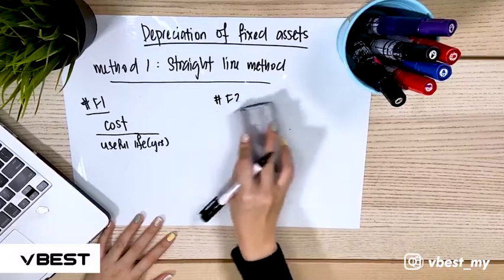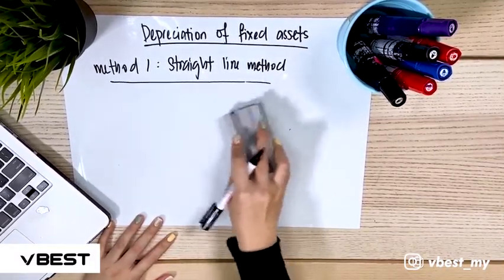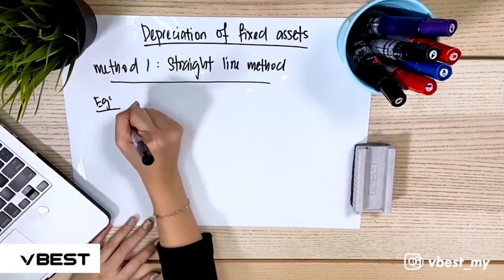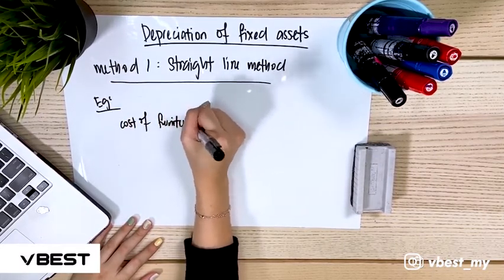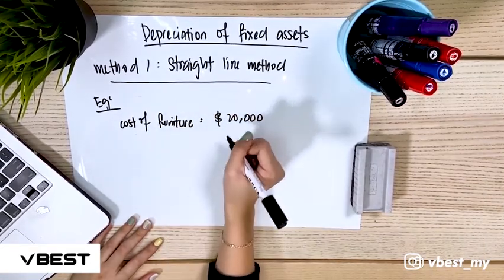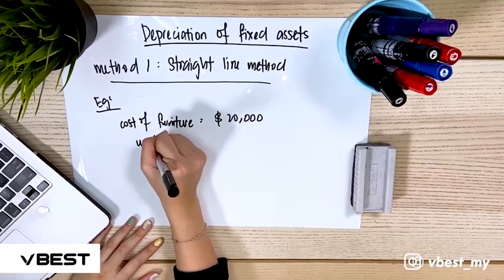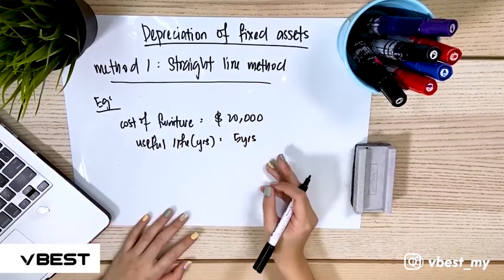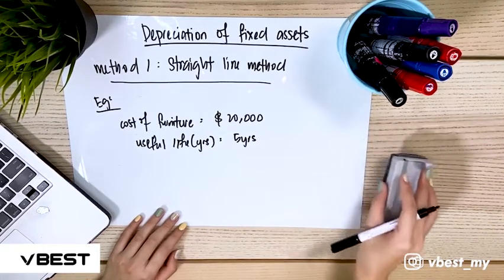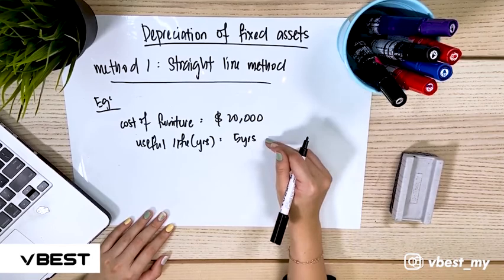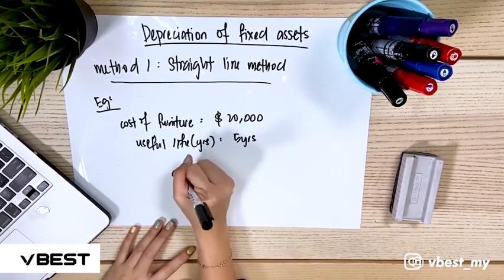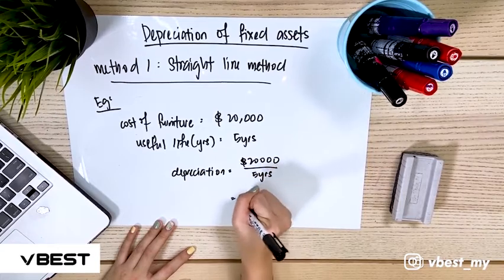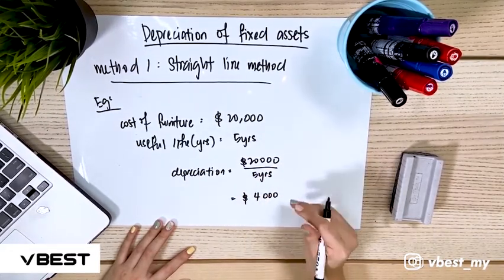We will see a few examples. For example one, we use the first formula: cost divided by useful life. The cost of furniture is 20,000 and the useful life is estimated at five years. So we calculate 20,000 divided by 5 years, which gives us a depreciation amount of 4,000. This is the result using the first formula.